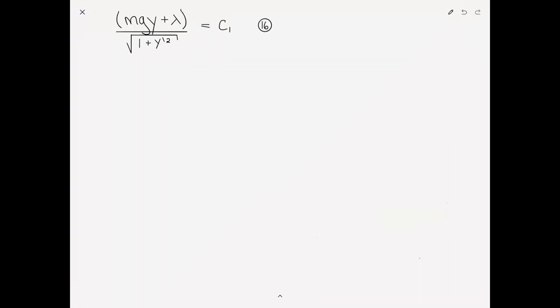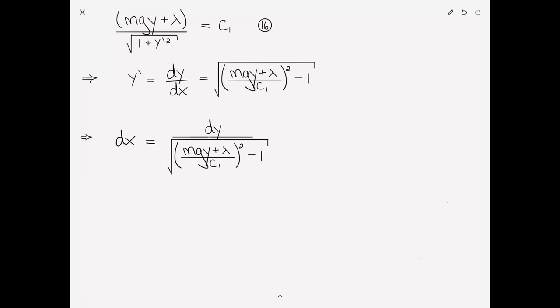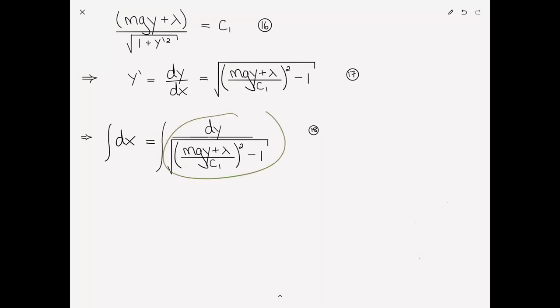We need to solve this equation for the derivative. Rewriting in terms of y-prime: dy/dx equals the square root of (mgy plus lambda) divided by c1, all squared, minus 1. We can separate variables by bringing everything depending on y into the denominator and everything depending on x into the numerator: dx equals dy divided by all of that. Integrating the left-hand side is simple and gives x plus a constant c2. Integrating the right-hand side is more tricky — fortunately a table of integrals can help out.